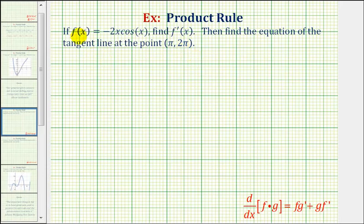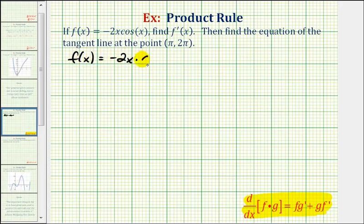The first thing we should recognize is that the given function is a product of two functions. We have f of x equals negative two x times cosine x. So to find our derivative function, we'll have to apply the product rule of differentiation. The derivative of function f times function g is equal to f times g prime plus g times f prime. Following the given formula, we can let the function f equal negative two x, and the function g be equal to cosine x.